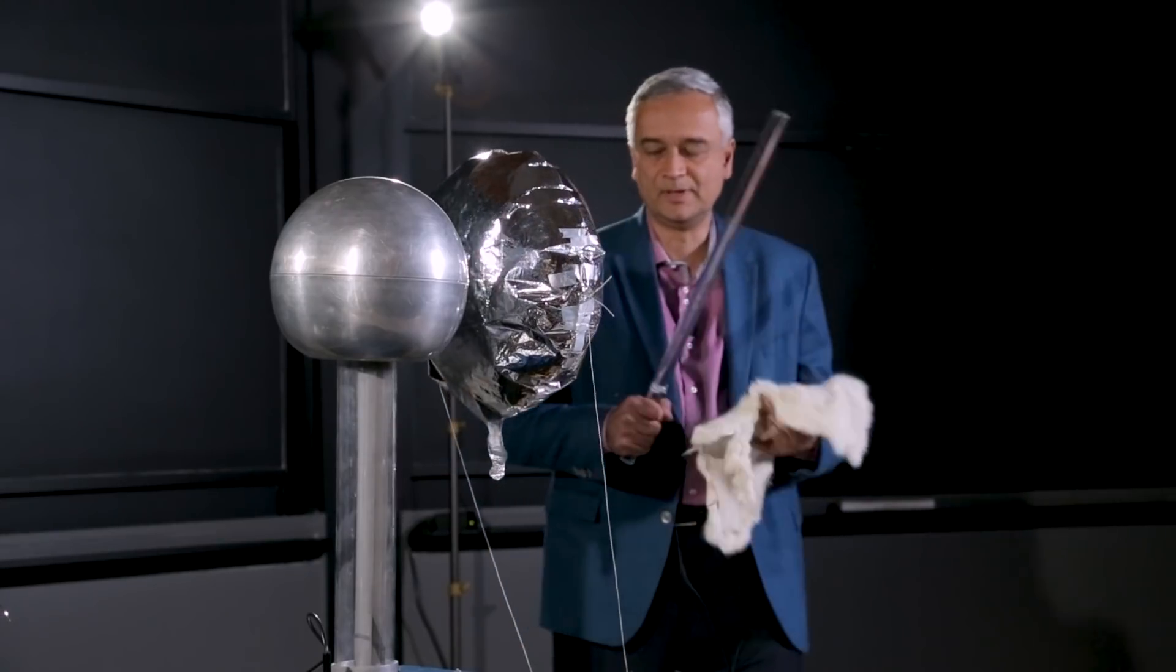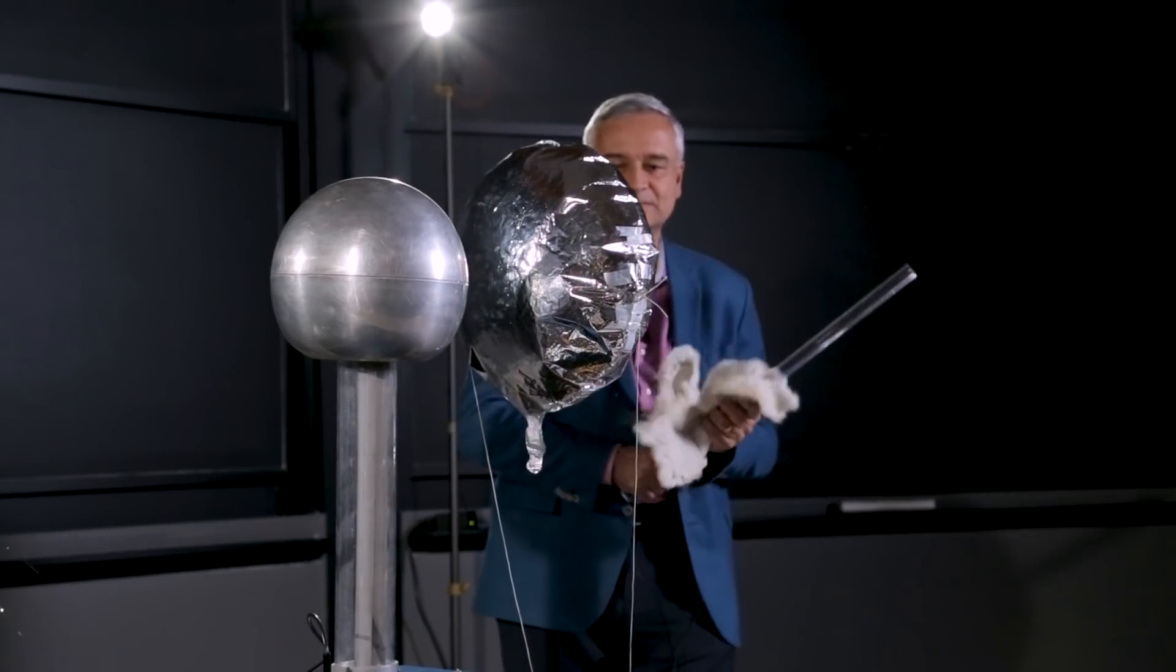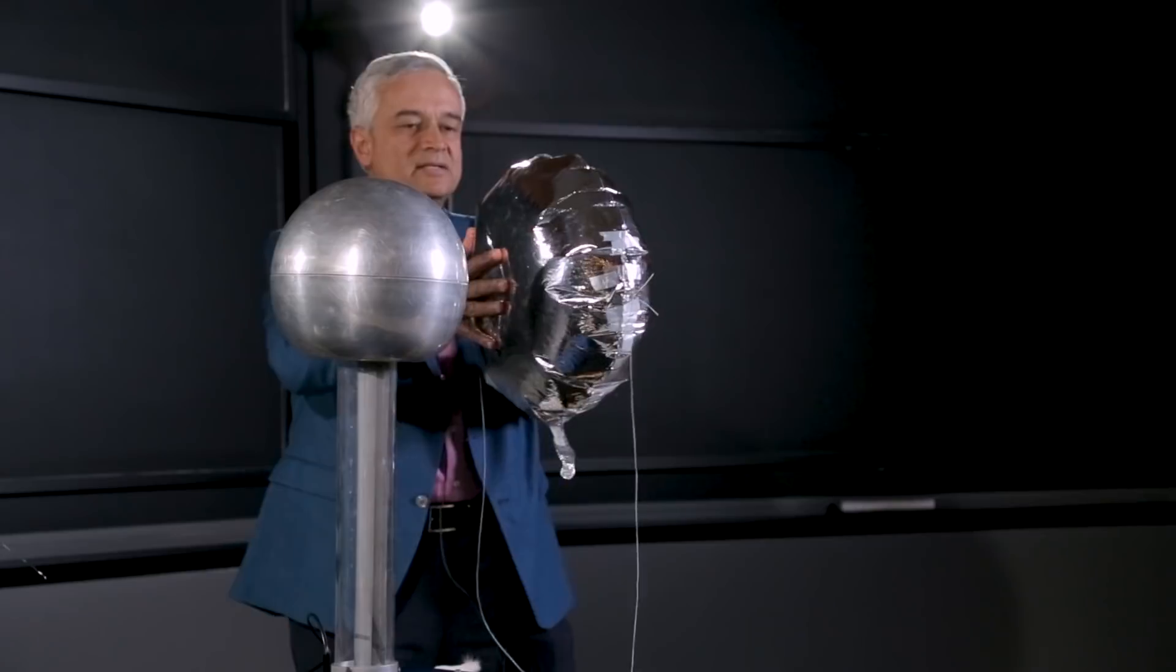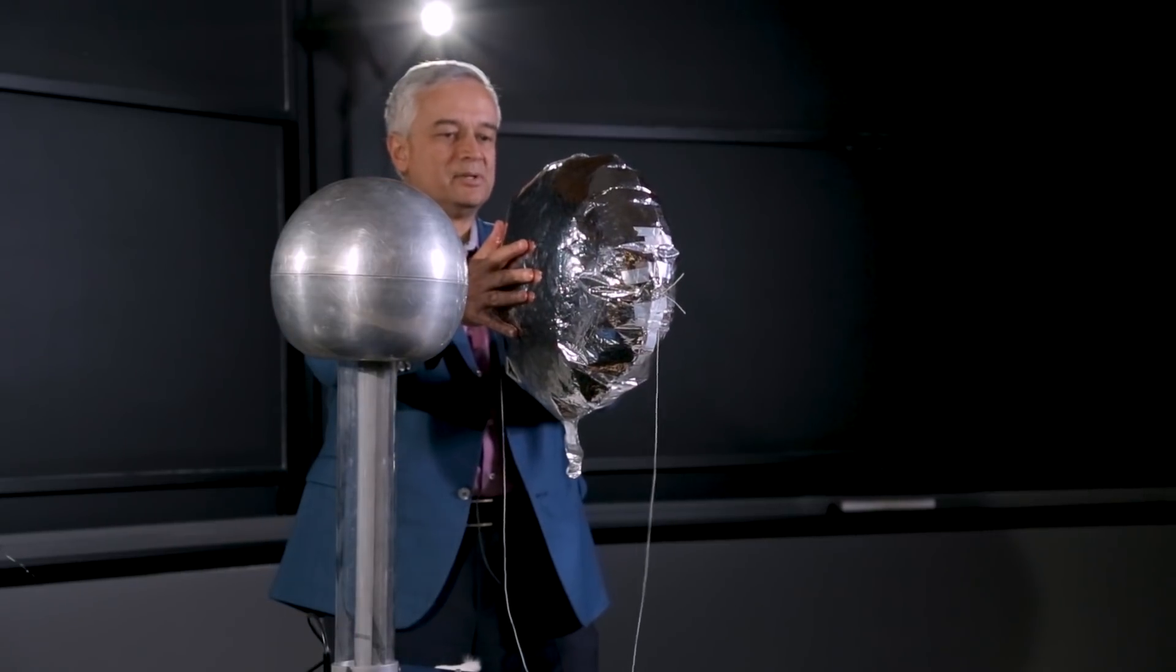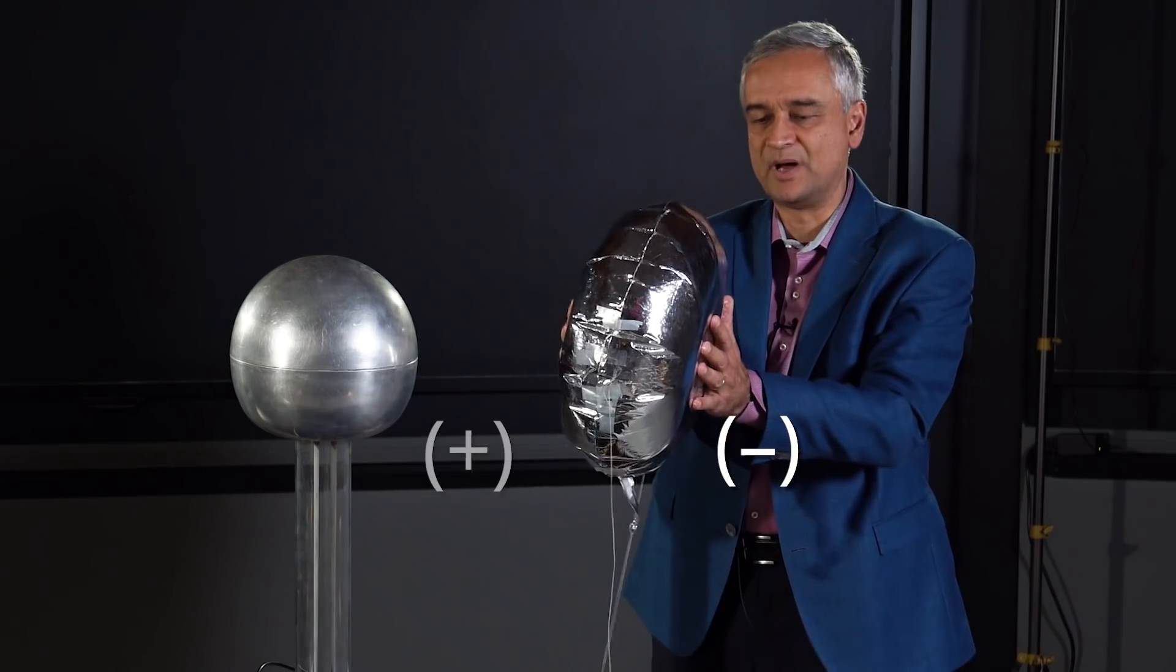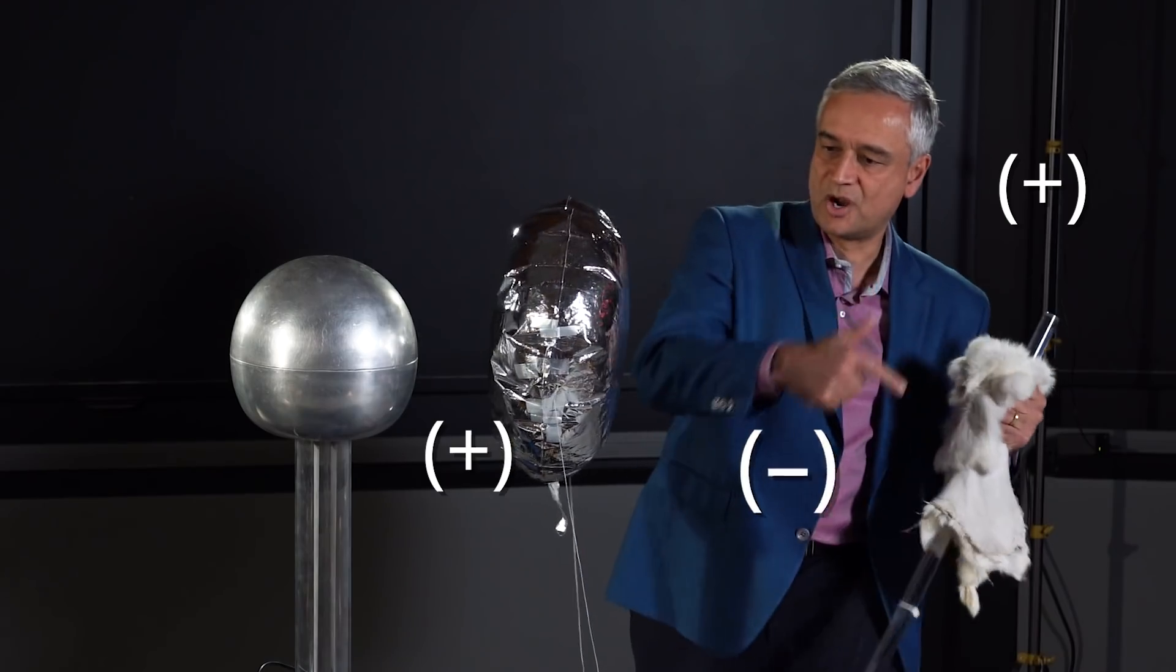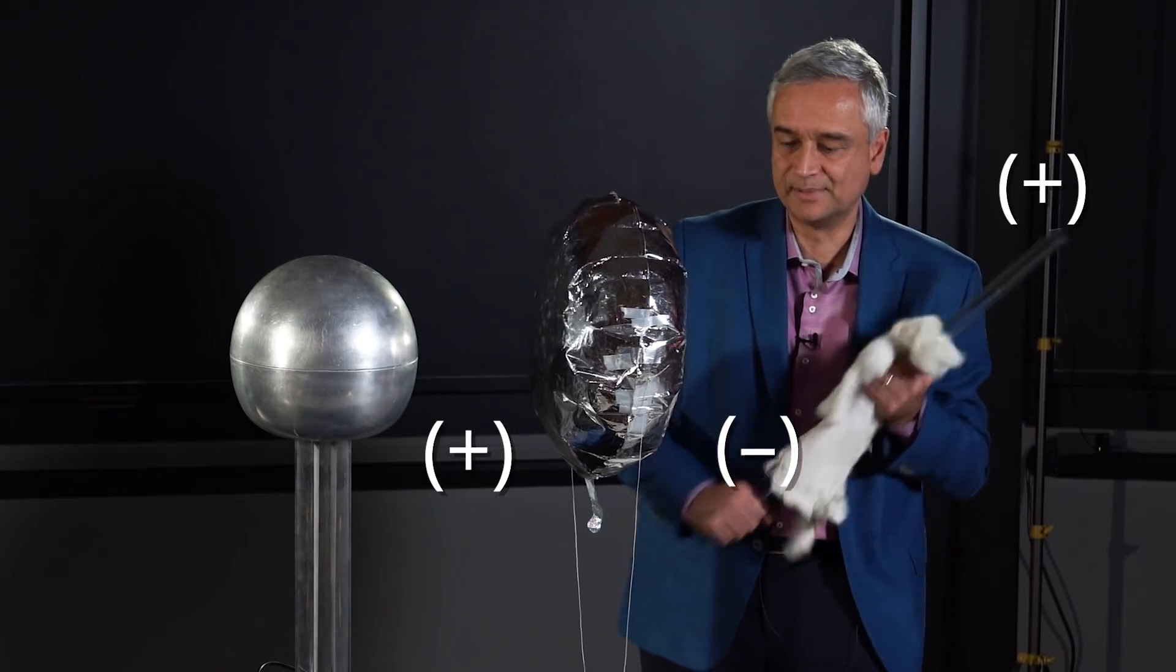The key thing is that the balloon is a conductor. So when I bring the positive rod next to the balloon, what's happening inside the balloon is that charge is being separated within the balloon, and we get a little extra negative on this side, a little extra positive on that side, because the positive rod is sucking negative charge this way inside the balloon.